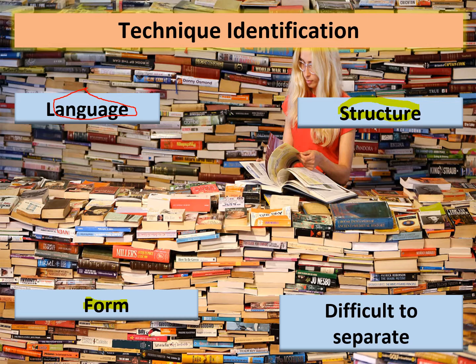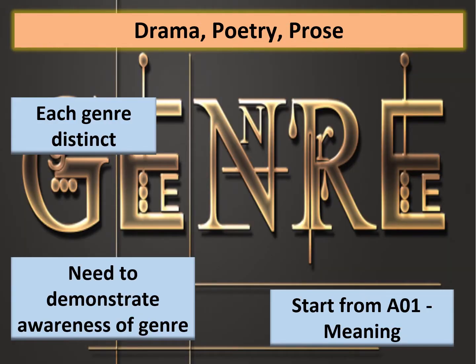Finally, form relates to both language and structure — it's the further categorization of that text. So a poem might also be a sonnet, with particular expectations of how many syllables there should be in each line and of how it should rhyme. Form can be detected by both the language used and the structure of the text and therefore should bring with it certain expectations.